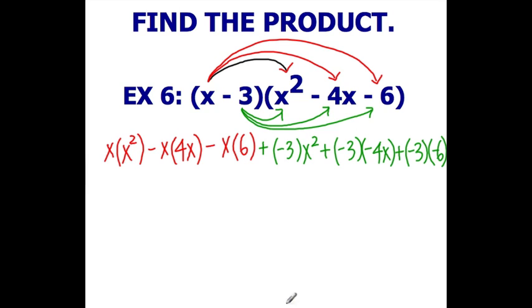From here on out, it's just multiplying. We have x cubed minus 4x squared minus 6x minus 3x squared plus 12x plus 18. Go ahead and identify your like terms.